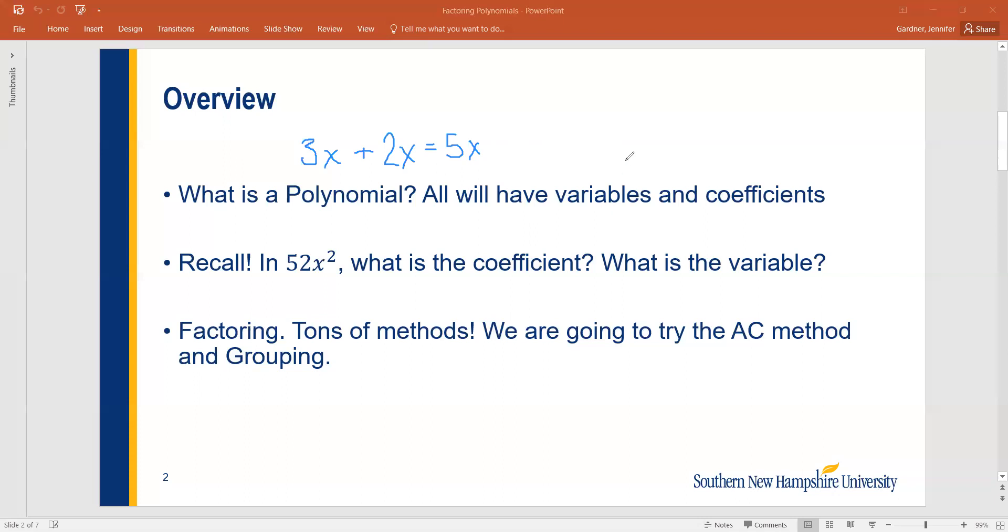Then there are binomials. That would be something like 3x to the third minus 3x squared, because it has two different terms. It has an x to the third power term and an x squared term. So it has two different x terms and therefore they can't be combined together and this is a binomial.